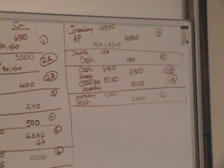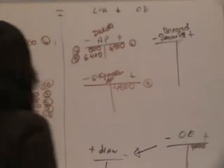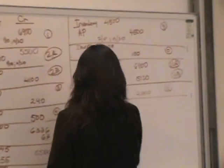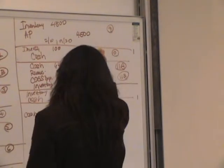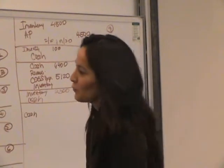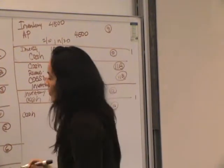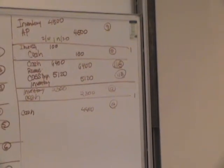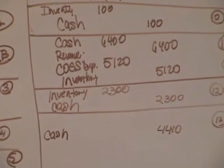So are we paying or receiving here? We're paying — we're paying Skywalker. So our cash is going to be a credit. If you're on a test, go down a few spaces because you know you're going to need some debits at the top of it. Cash credit for $4,410. Next, make accounts payable zero — debit accounts payable for $4,500.